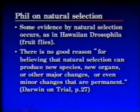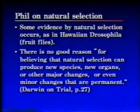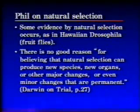Phil actually believes in evolution — he'll even give you Hawaiian Drosophila as a case of evolution by naturalistic causes. But he says there's no reason for believing that natural selection can produce new species, new organs, or other major changes. Well, the older and newer species of Hawaiian Drosophila differ in major morphology — head shape and size, internal organs — and they most certainly deserve to be called different species. More than 20 million generations separate some of these, and when you do DNA-DNA hybridization or sequence genomes and compare them, the genetic distances are quite large.